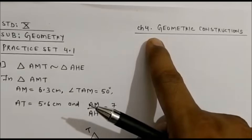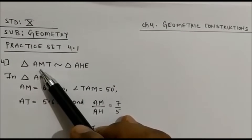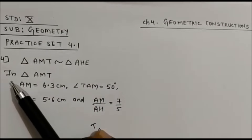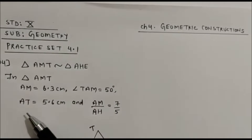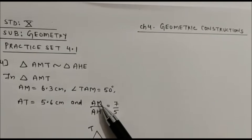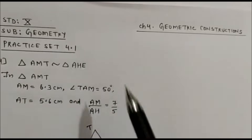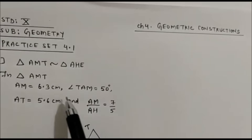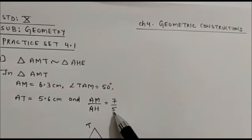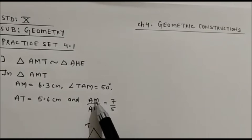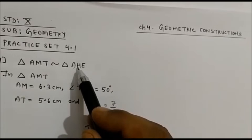In today's topic, Geometric Construction practice at 4.1, question 4: triangle AMT similar to triangle AHE. In triangle AMT, AM is 6.3 cm, angle TAM is 50 degrees, AT is 5.6 cm, and the ratio given is AM upon AH equals 7 upon 5. Point A is common. AM corresponds to 7 and AH to 5, so triangle AMT is the bigger triangle.